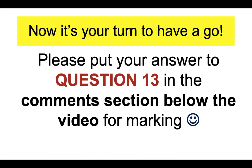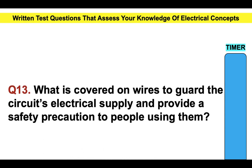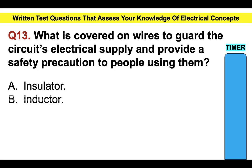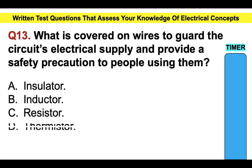Now it's your turn. Please put your answer to question thirteen in the comments section below the video. If you apply some common sense, you should be able to answer it. What is covered on wires to guard the circuit's electrical supply and provide a safety precaution to people using them? A, insulator; B, inductor; C, resistor; or D, thermistor.